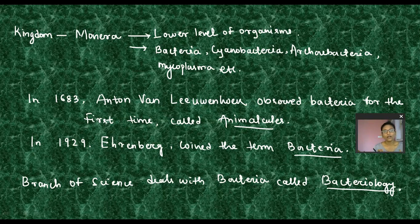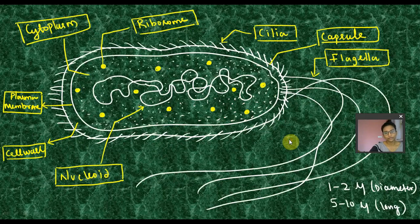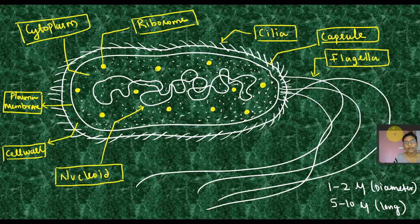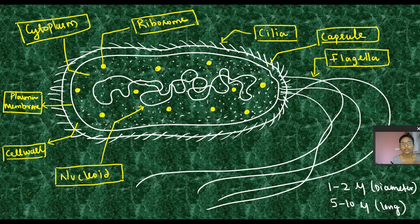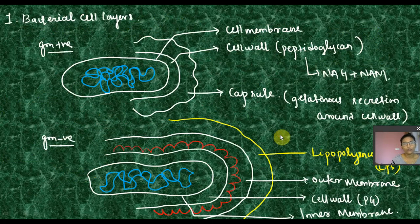The branch of science that deals with bacteria is known as bacteriology. Typical bacteria can be seen in the diagram of the structures. Typical bacteria have chromosomal content dispersed through the body, some cytoplasmic content, membrane and cell layers. Size-wise, diameter is 1–2 microns and length is 5–10 microns.